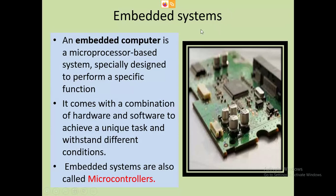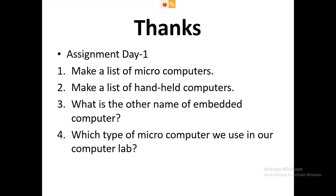Examples of embedded systems you must have seen in your home — the microwave and the washing machine. How does the washing machine work? It works with microcontrollers. It reads the speed of the motor, door sensor, pressure sensor, and keypad instructions. These computers are fitted in different types of home devices.